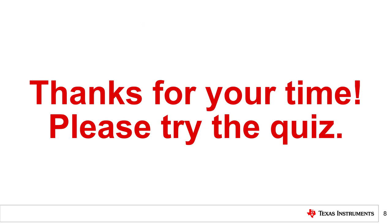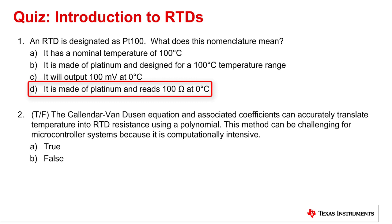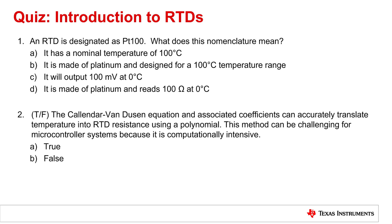That concludes this video. Thank you for watching. Please try the quiz to check your understanding of this video's content. Question 1: An RTD is designated as PT100. What does this nomenclature mean? The correct answer is D — it is made of platinum and reads 100 ohms at 0 degrees C. Question 2: True or false — the Callendar-Van Dusen equation and associated coefficients can accurately translate temperature into RTD resistance using a polynomial. This method can be challenging for microcontroller systems because it is computationally intensive. The correct answer is A, true.